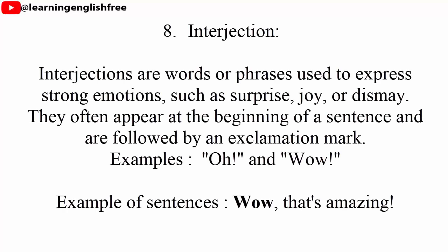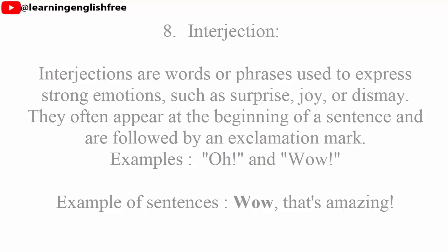8. Interjection. Interjections are words or phrases used to express strong emotions, such as surprise, joy, or dismay. They often appear at the beginning of a sentence and are followed by an exclamation mark. Examples: oh, wow. Example sentence: Wow, that's amazing!